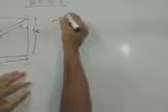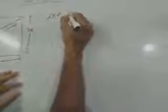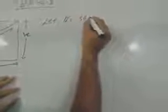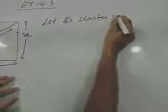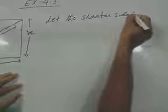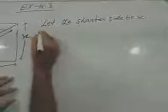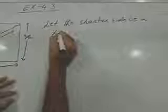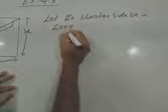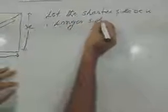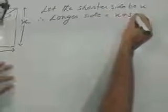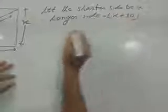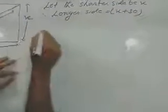Let us find. First we will write, let the shorter side be x. Therefore, longer side is equal to x plus 30. And diagonal is equal to x plus 60.